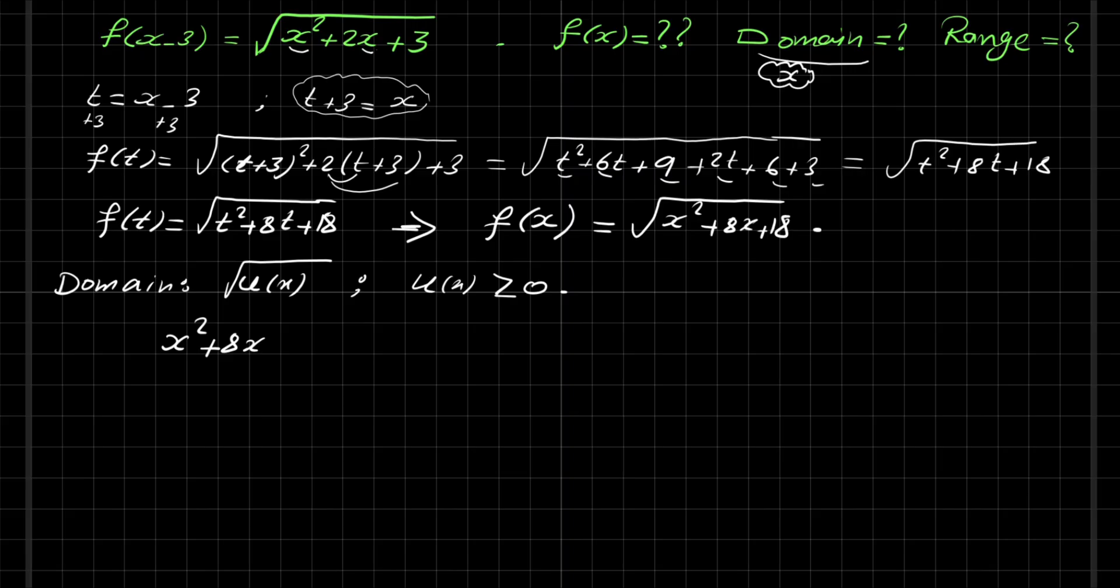f(x), let's split 18 into 16 plus 2. So f(x) equals square root of x squared plus 8x plus 16 plus 2. This is x plus 4 squared plus 2.